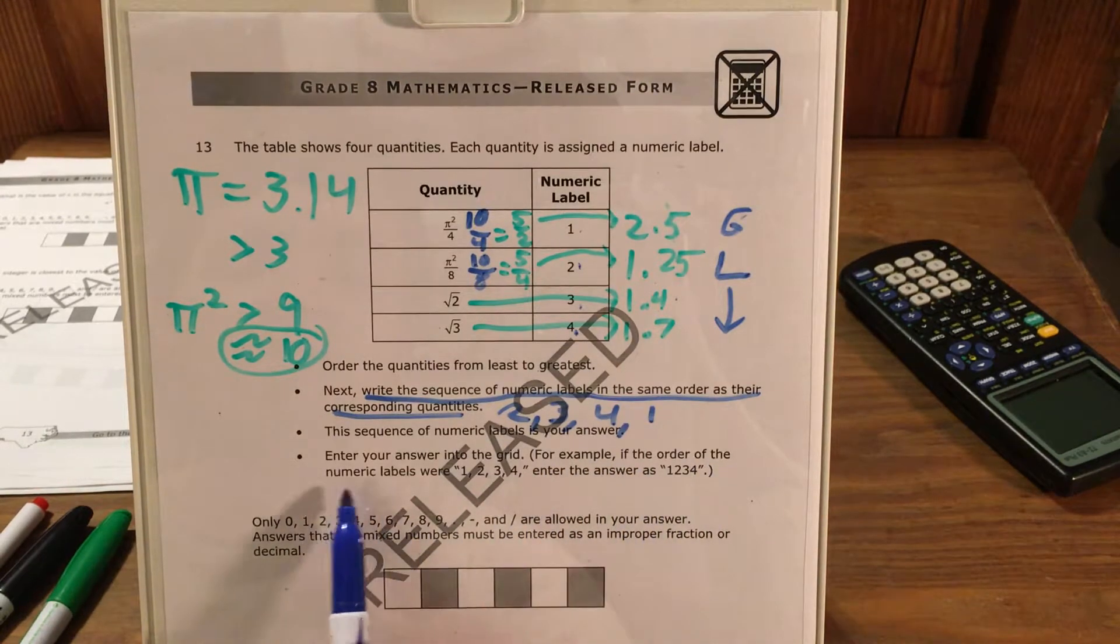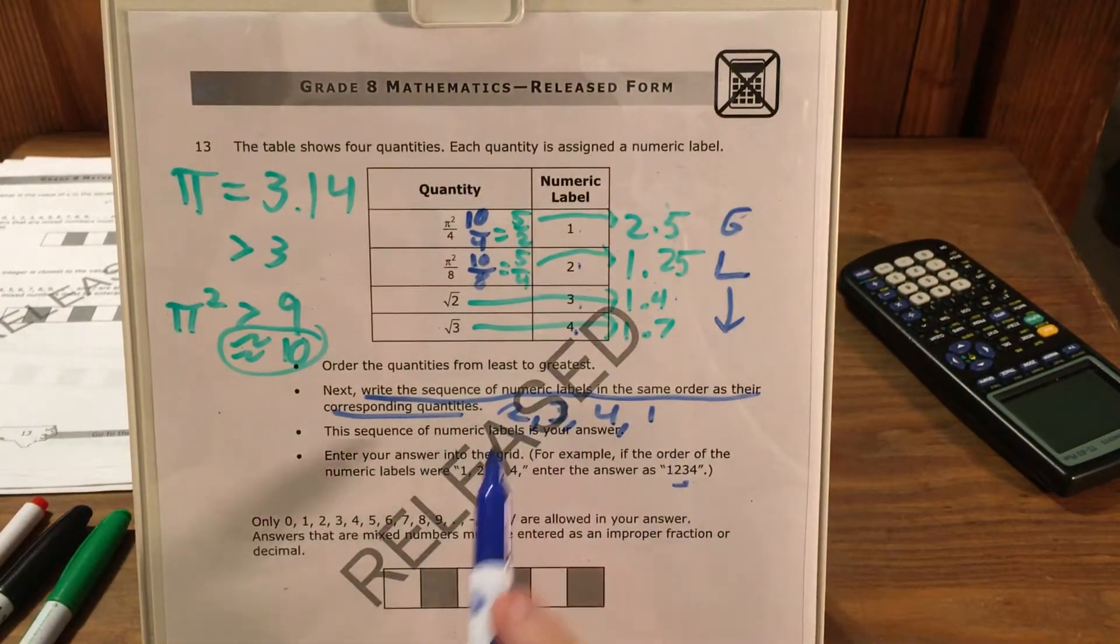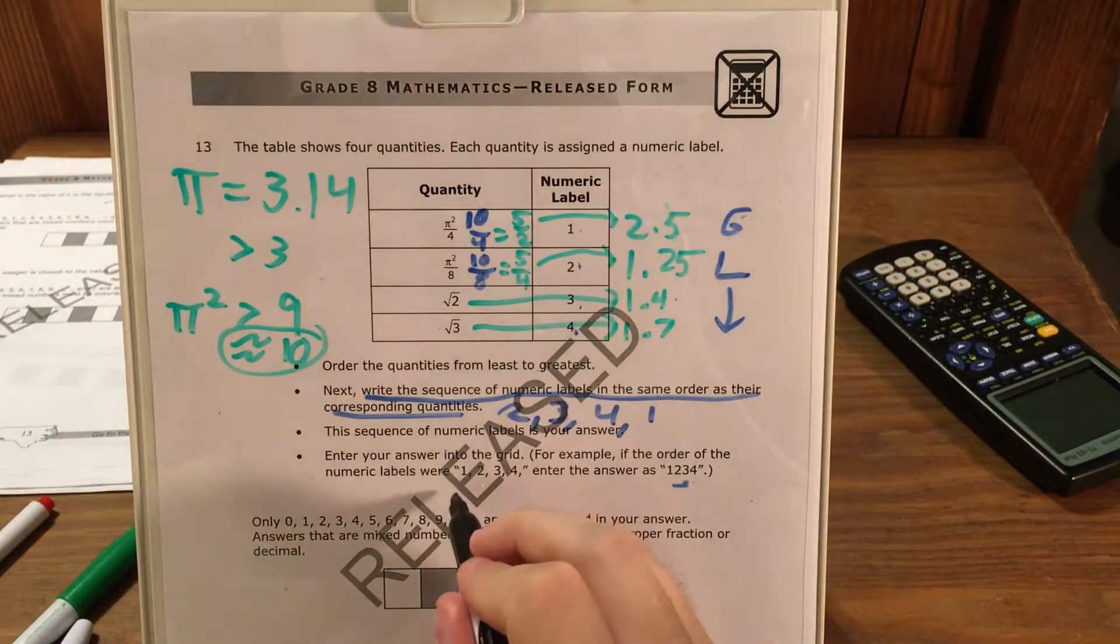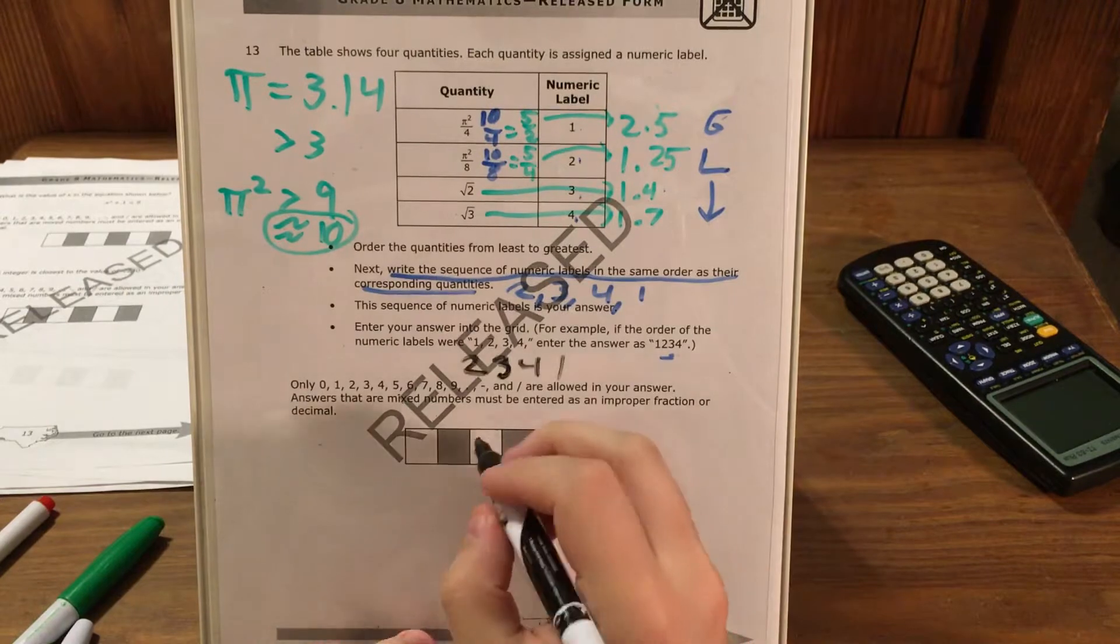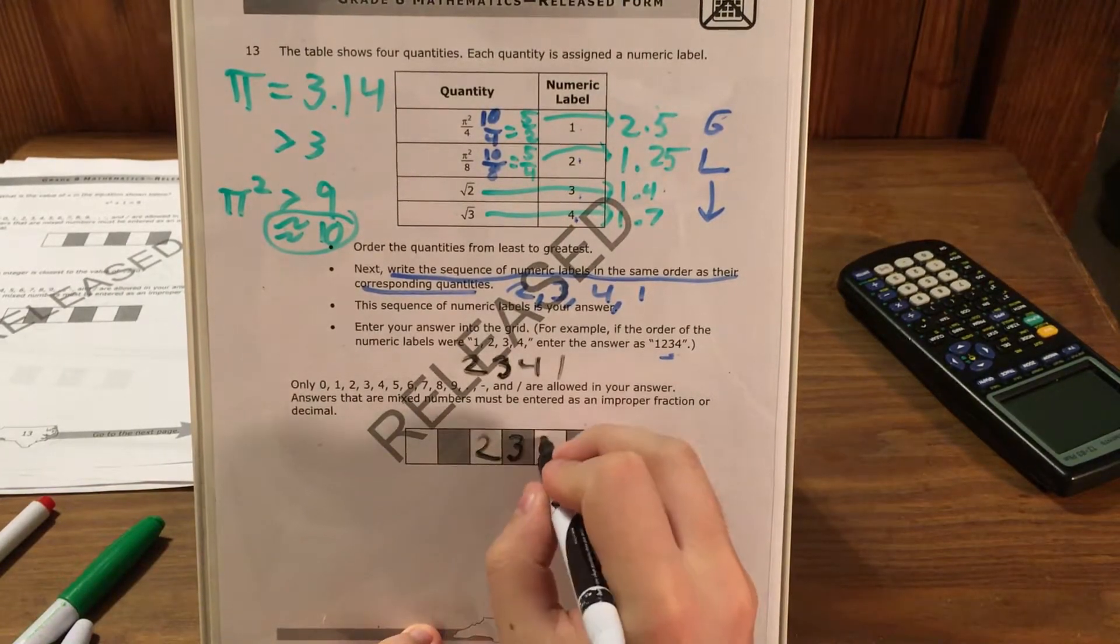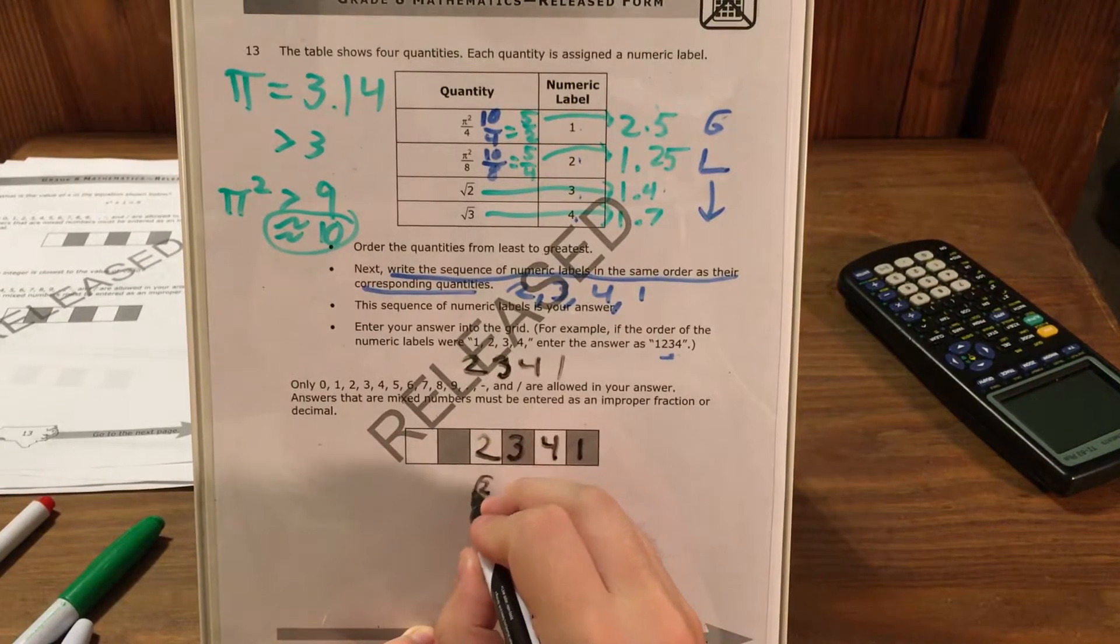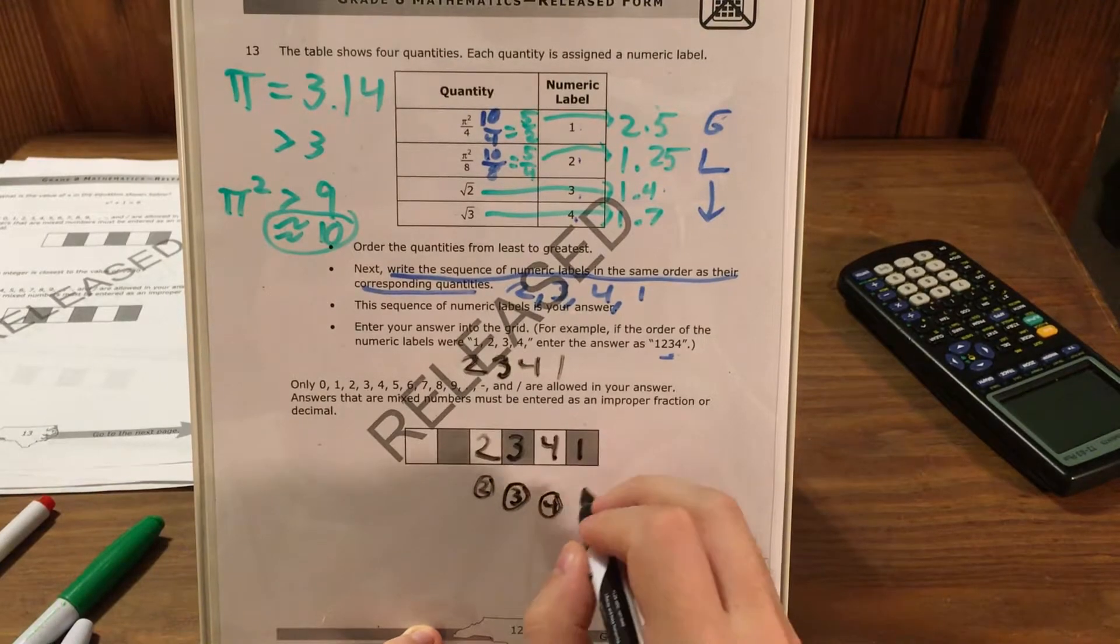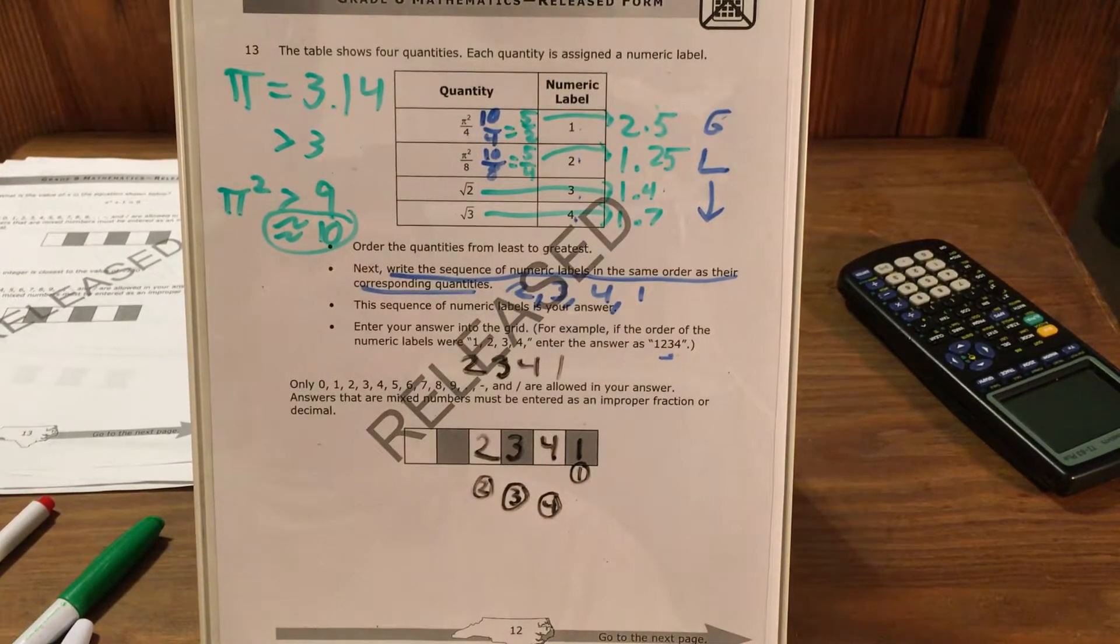For example, if the order of the numeric labels were 1, 2, 3, 4, enter the answer as just 1234 without commas. So I know that my answer is going to be 2, 3, 4, 1, so I'm going to enter that into my gridded response boxes. I'm going to look for my 2 bubble underneath my 2, 3 bubble underneath my 3, 4 bubble underneath my 4, and my 1 bubble right here underneath my 1, and that's going to be what my answer will look like.